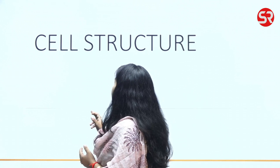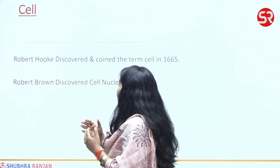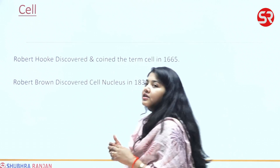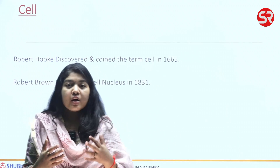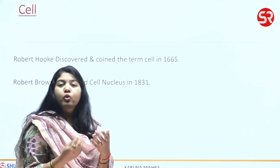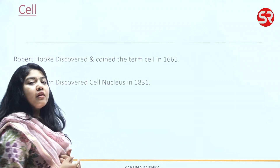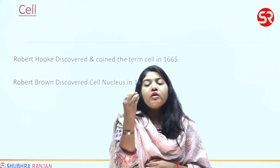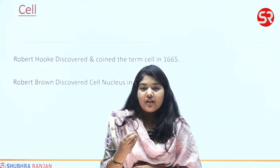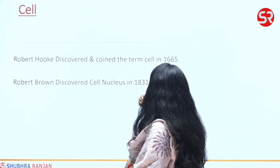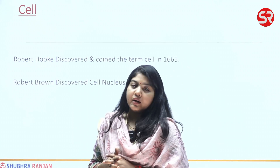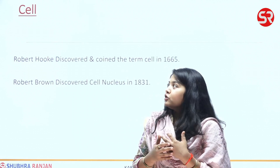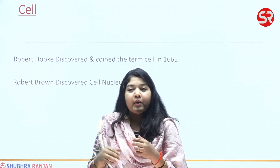When I talk about the cell, the people who should be credited are Robert Hooke, who discovered and coined the term 'cell' back in 1665. But it took almost 200 years for Brown to discover the brain of the cell — the most important functional unit within the cell — that is the nucleus, which was discovered in the year 1831.